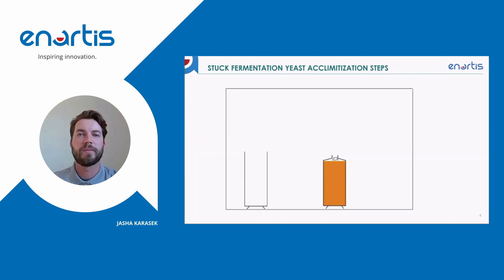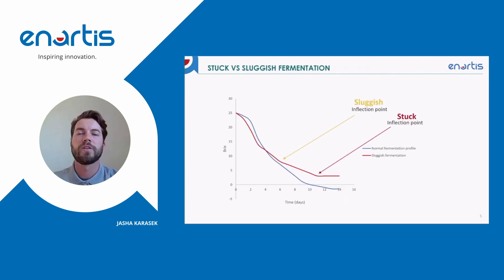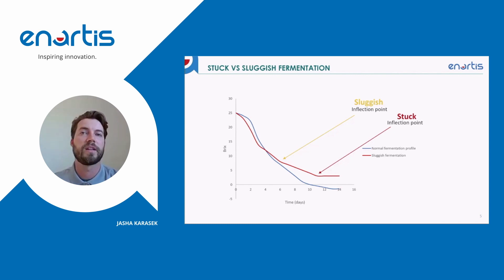Then we let that ferment until it becomes completely dry, monitoring it along the way to make sure that the Brix continues to decrease and residual sugar levels go down to zero. We also want to monitor for VA increases to make sure volatile acidity is not getting too high. As you can see, there are a lot of steps and a lot of time and energy involved in a yeast acclimatization for a stuck wine, but it's really necessary in order to finish the fermentation.